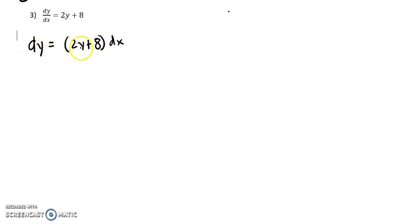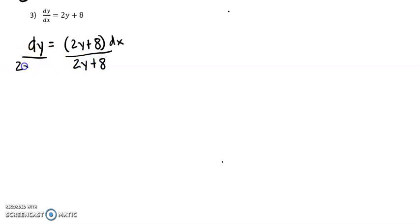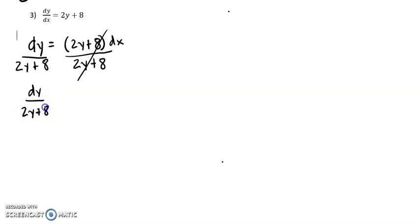We have some y's on one side and some y's on the other, so let's get them all on the same side. We're keeping dy on top because that's what we'll integrate with respect to. Let's divide both sides by 2y plus 8. So we have dy over 2y plus 8 equals dx.